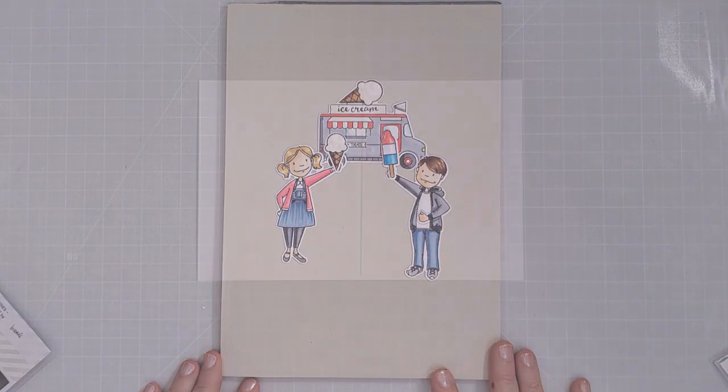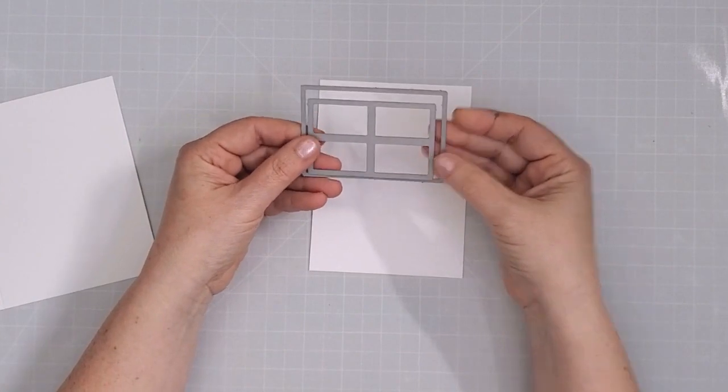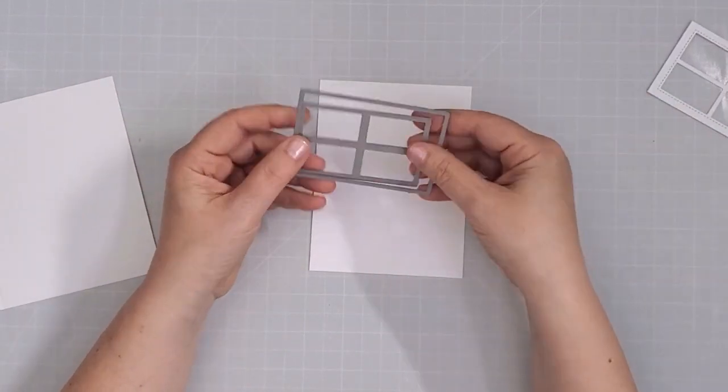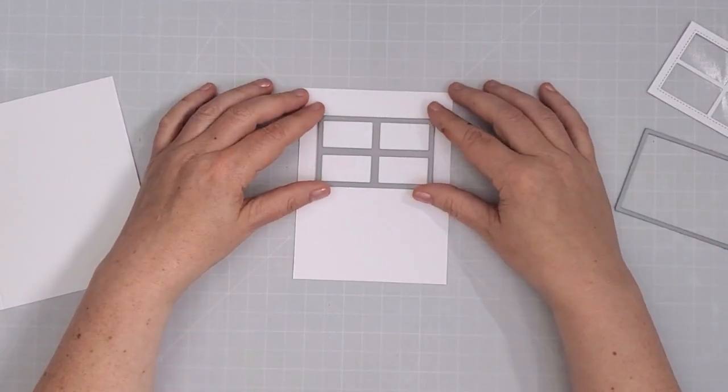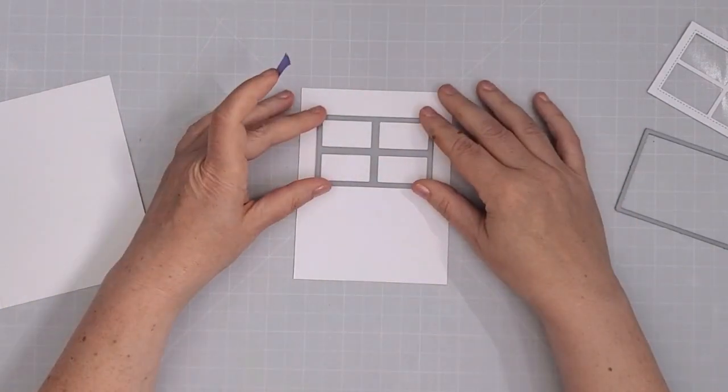I'm creating a scene with the kids looking out a window at the ice cream truck so I started by cutting a window frame with the Essentials by Ellen Winter Window Die Set. I used just the inner die and I stuck it down with some purple tape and ran it through my Gemini Junior to cut the window from a panel of white cardstock.